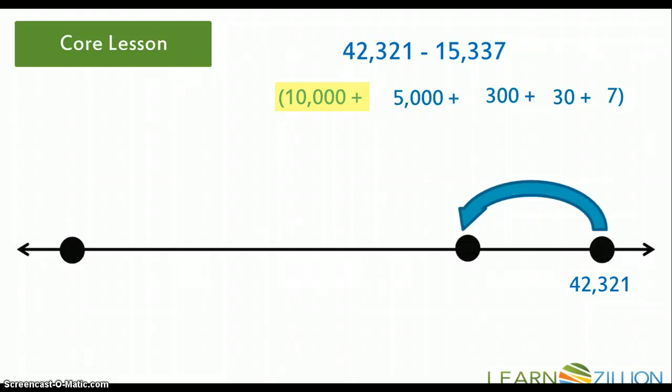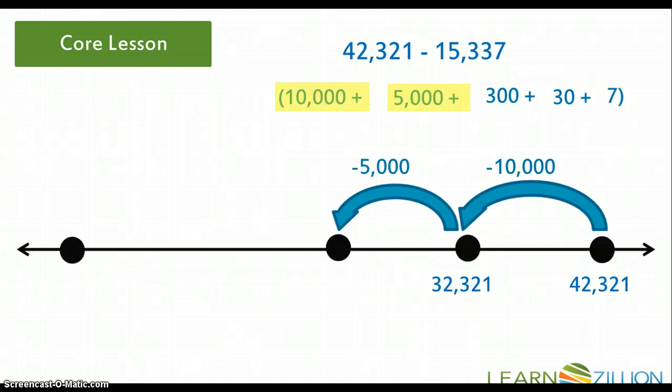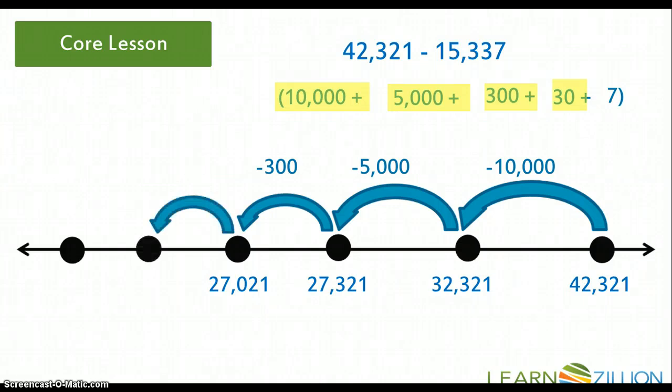So 42,321 minus 10,000 will give me 32,321. And then I'm going to subtract 5,000 from 32,321 and get a difference of 27,321. And my next value I'm subtracting is 300. So I'm going to have a value of 27,021 and then 30. So I'm taking 27,021 minus 30 and I get 26,991.